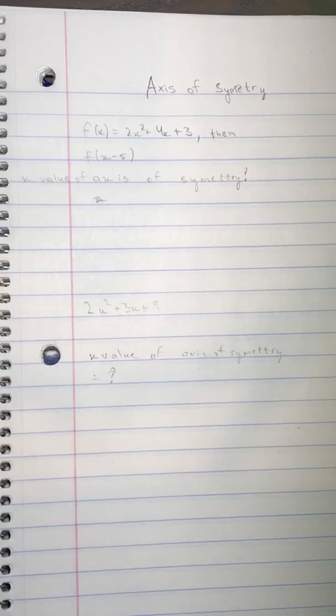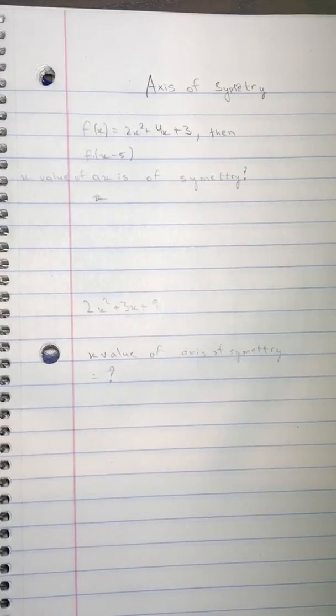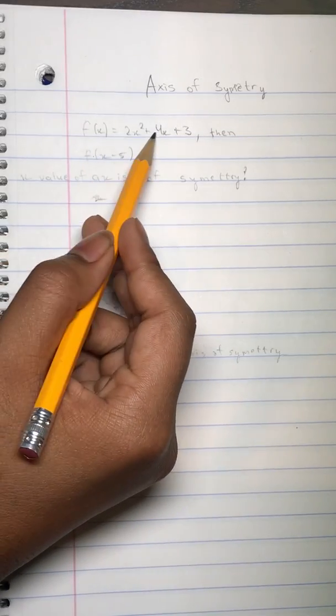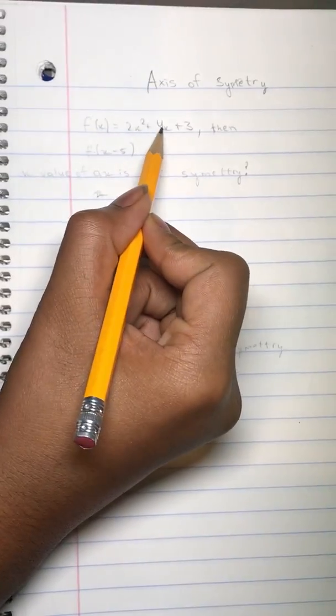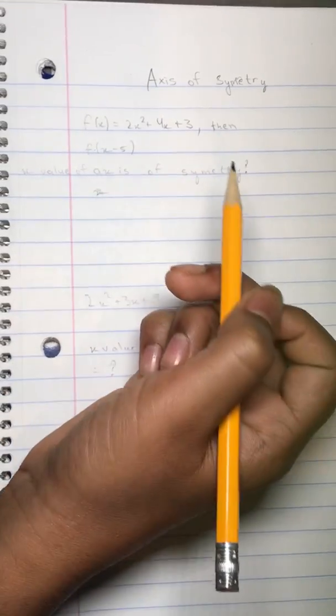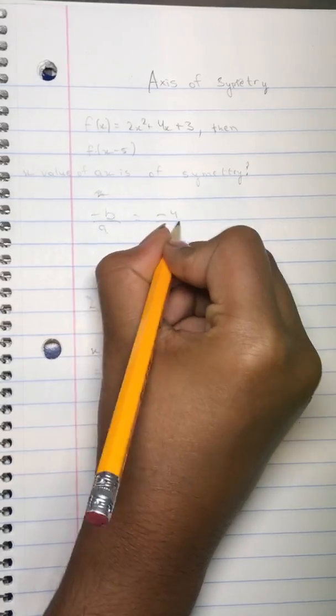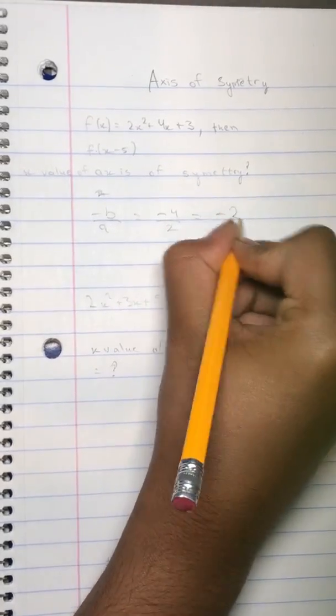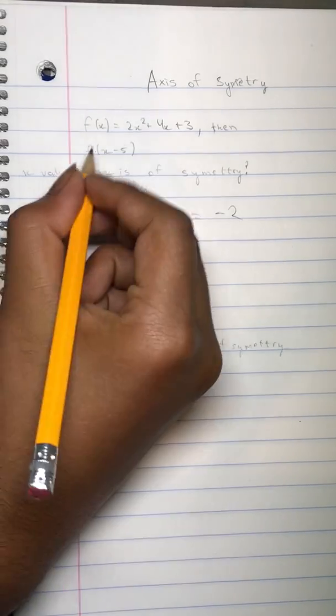But most likely, or actually I've never seen it ask the y value. But if it asks the x value you just do negative B over A. So let's try that. Negative B, so negative 4 over 2, that's negative 2. So there you have it, but you're not done yet because it said f of x minus 5.